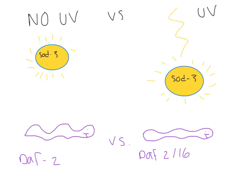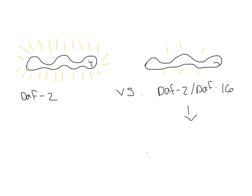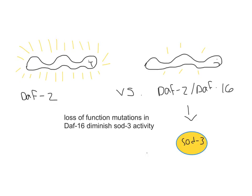This dismutase defends animals against oxidative stress and is a target of DAF16. We compared the fluorescence of SOD3 in DAF2 and DAF2-DAF16 with no UV exposure and after UV exposure. We hypothesized that the DAF2 mutants would show the most fluorescence, since studies indicate that mutations of DAF16 diminish SOD3 activity.